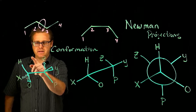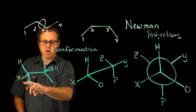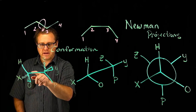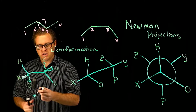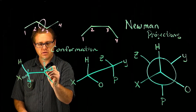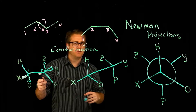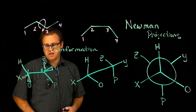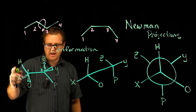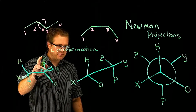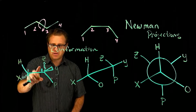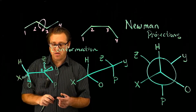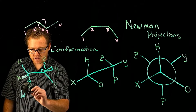What we have here is an imaginary molecule. We have two carbons — we'll number them carbon 1 and carbon 2. But then all the other elements are just the alphabet — they're not actual elements per se.